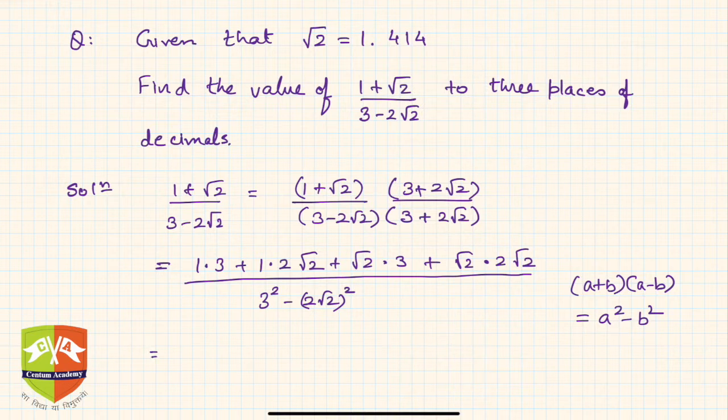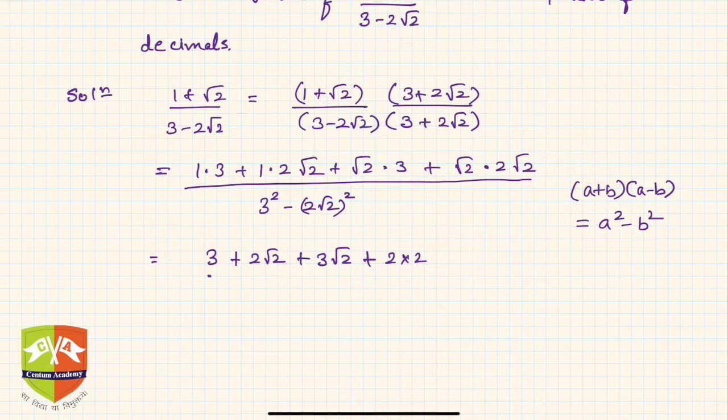In the numerator what do I get? I get 3 plus 2 root 2 plus 3 root 2 plus 2 times root 2 times root 2 is 2 times 2, that is 4.